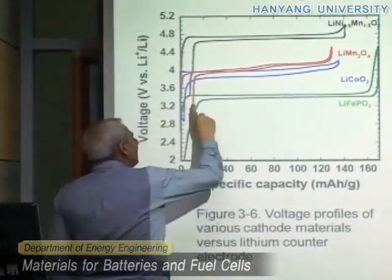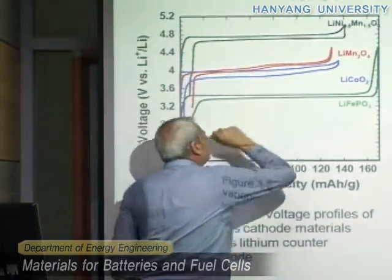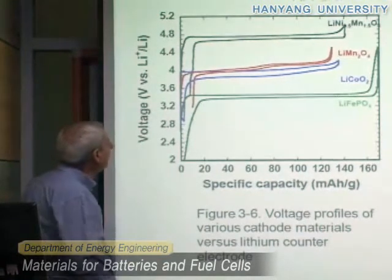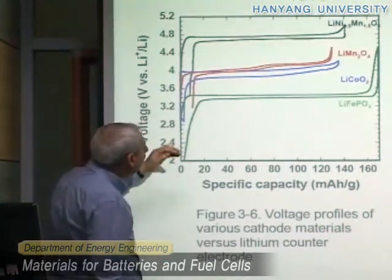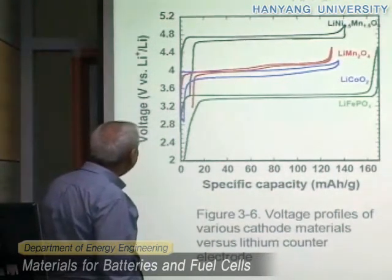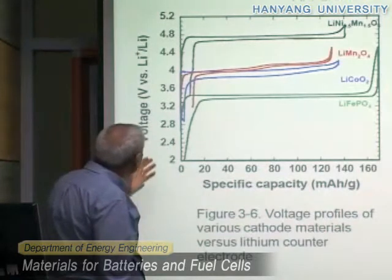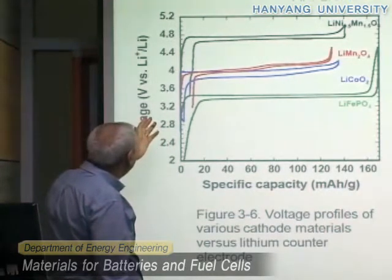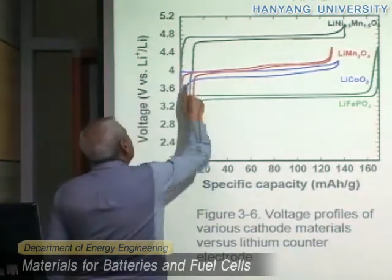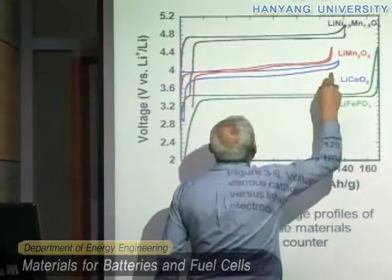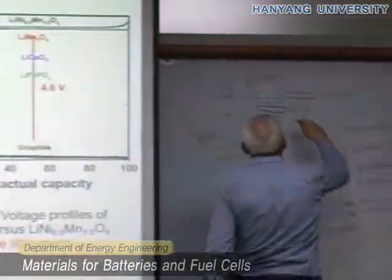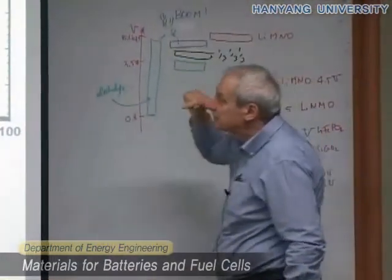Then we have lithium manganese oxide with these two plateaus due to the change in structure that I mentioned before. Lithium cobalt oxide again also around 4 volts. And then we have lithium manganese oxide — even with the average being the black one, the average is 4.5 volts, but in charge you go up even to 5 volts. So you are completely out from the stabilization window.